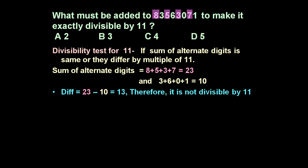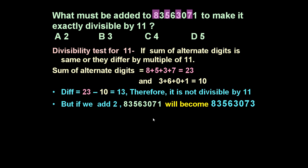The question is: what must be added so that their difference becomes 11, a multiple of 11, or 0? Here the sums are 23 and 10, and their difference must become 11. If 2 is added to the second group, it will become 12 and their difference will become 11.